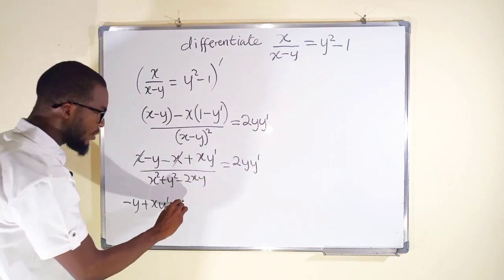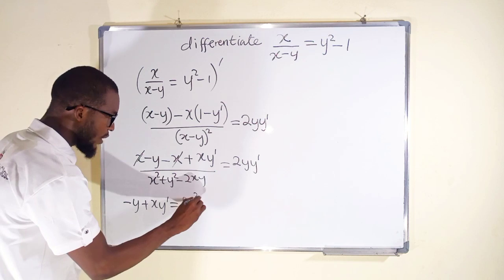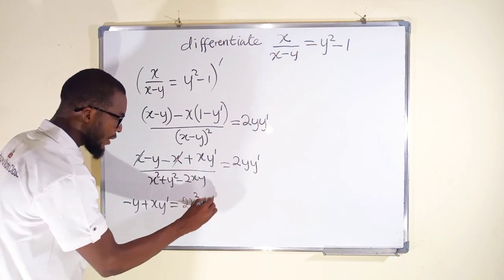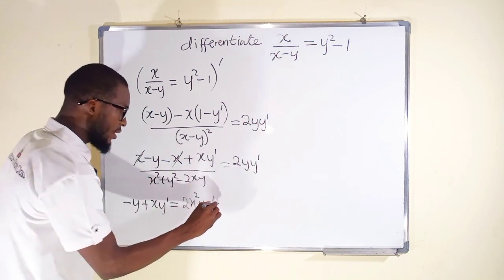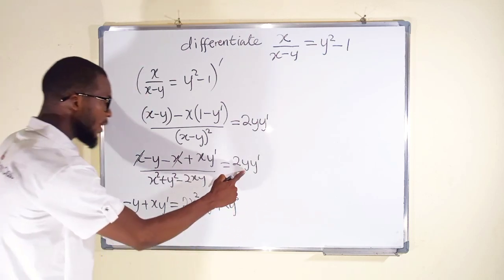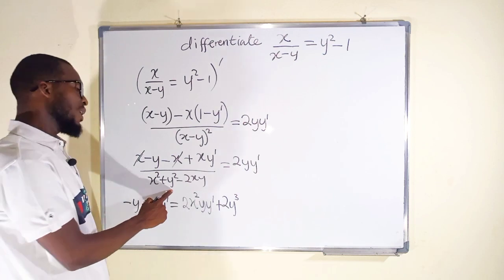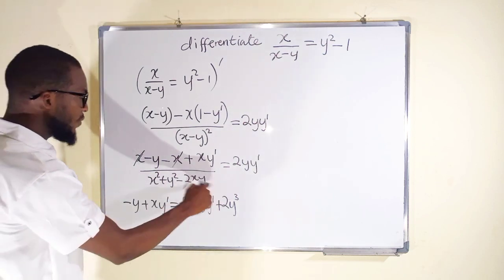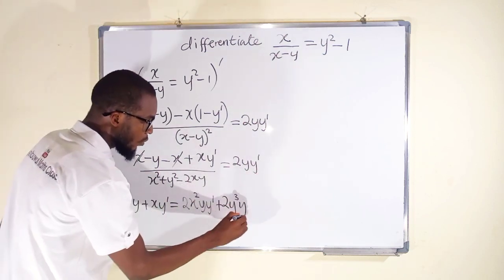2y y prime times x squared is going to be 2x squared y y prime. Then this times this is going to make it plus 2y cubed because we have y here and we have y squared here. If they multiply you get y cubed but we still have y prime.